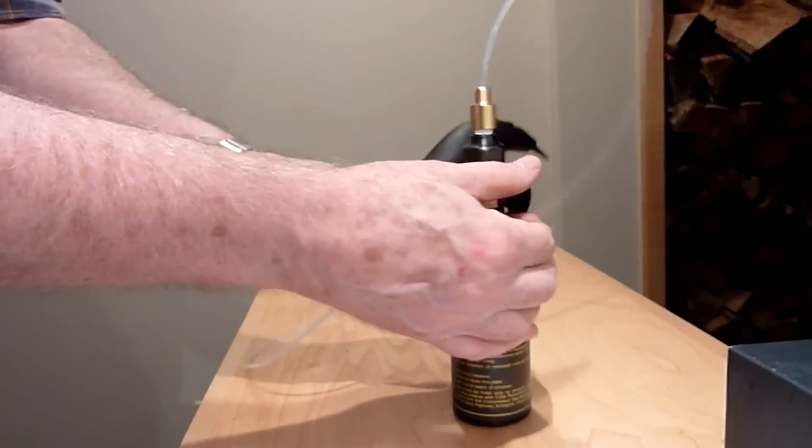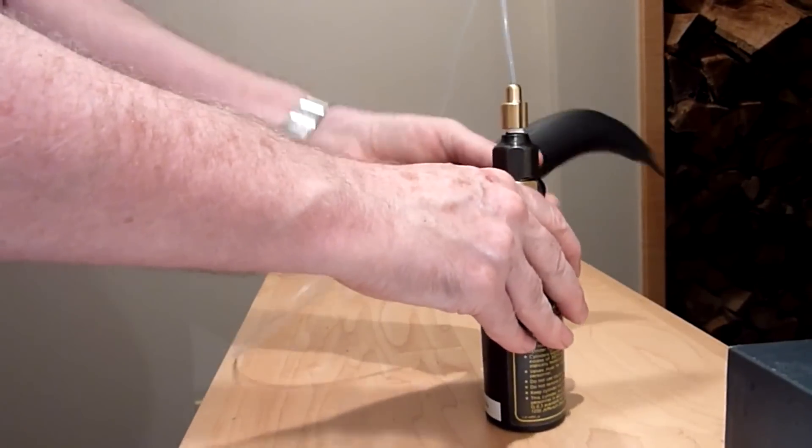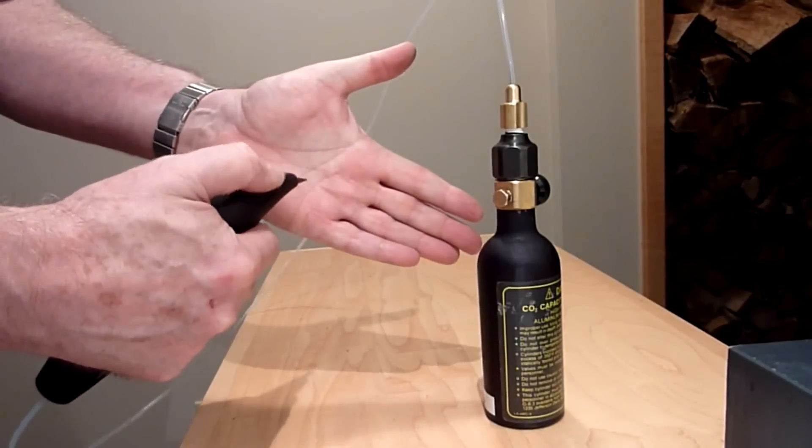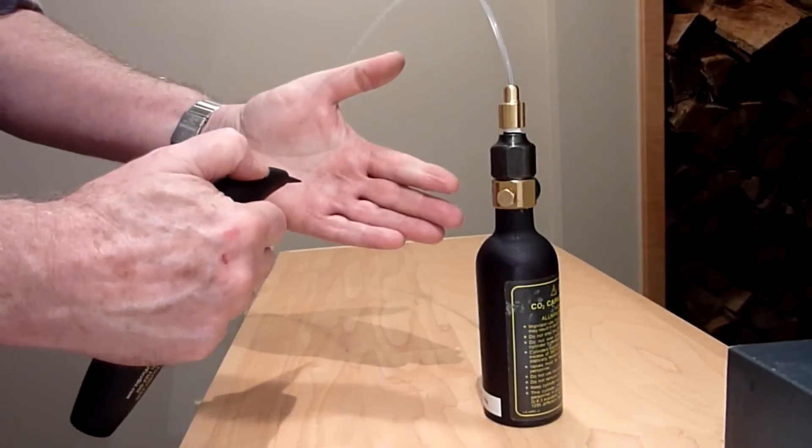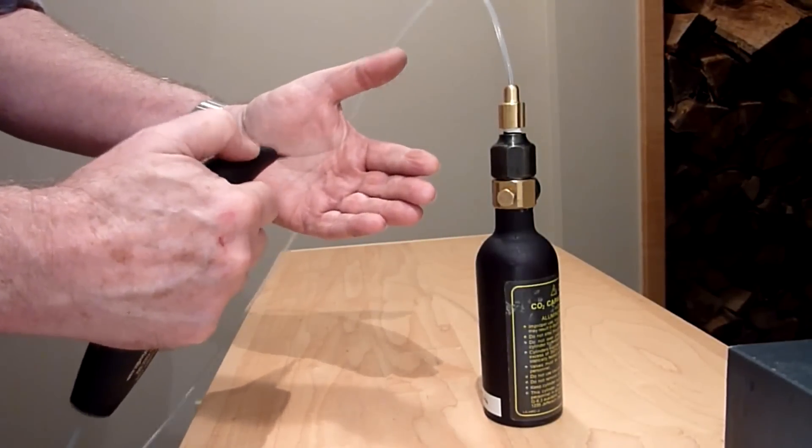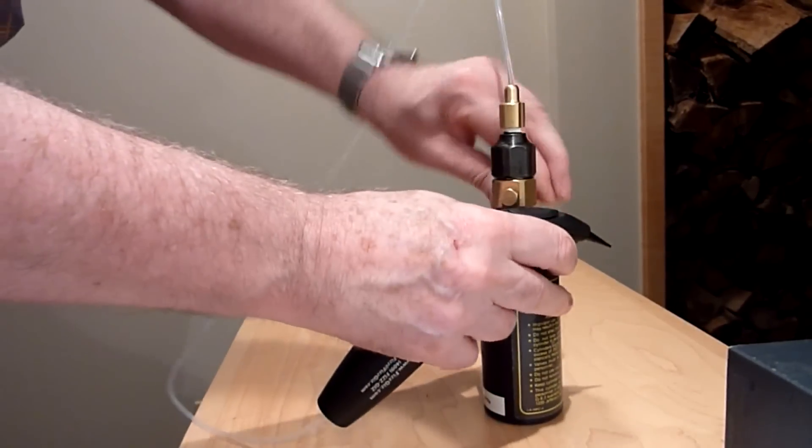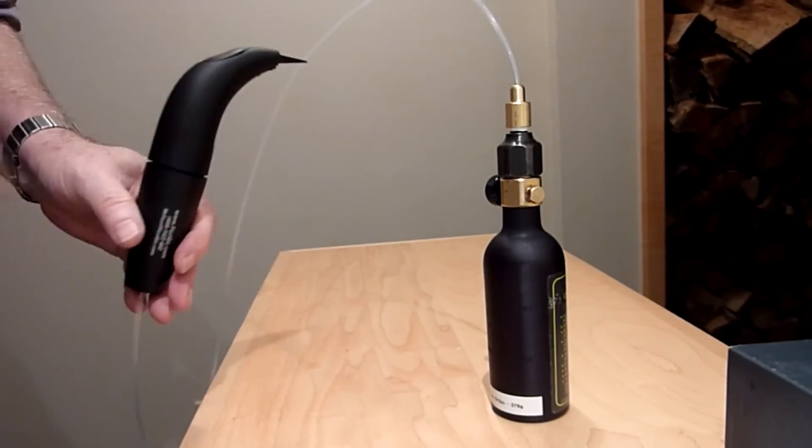When you turn on the tank, you're pressurized. And of course, you can turn it off and turn it on again. When not in use, it's always a good idea to leave the valve closed. Now, you have enough CO2 for many, many low-cost drinks.